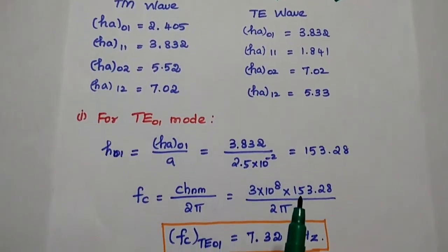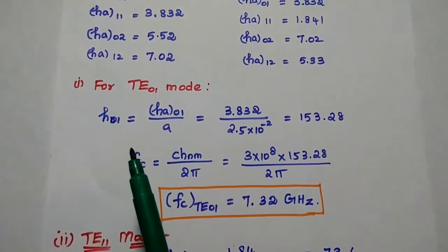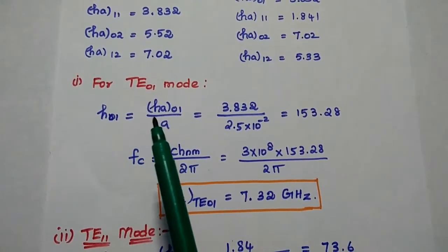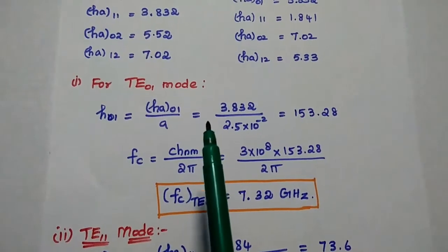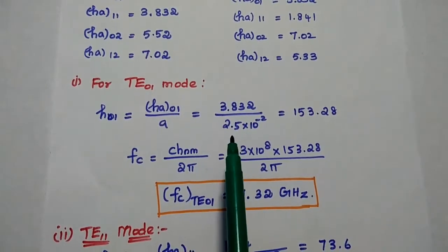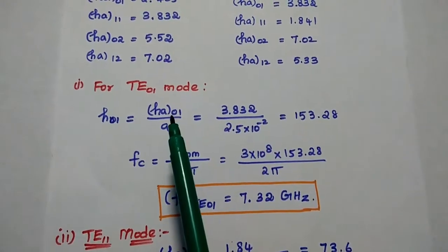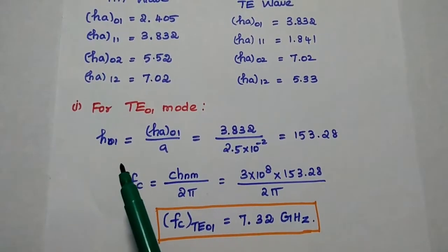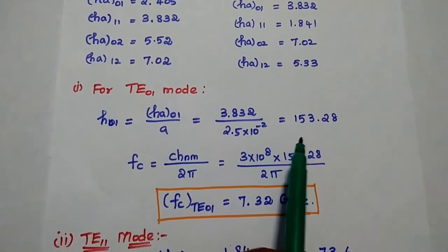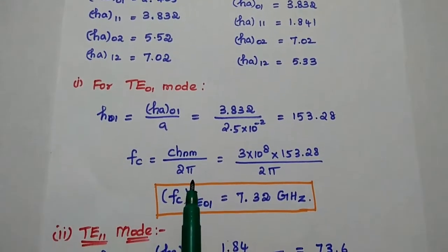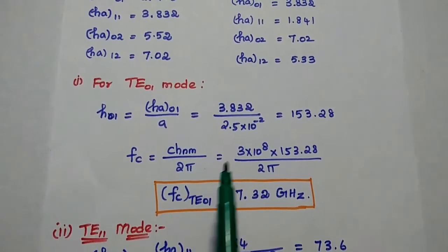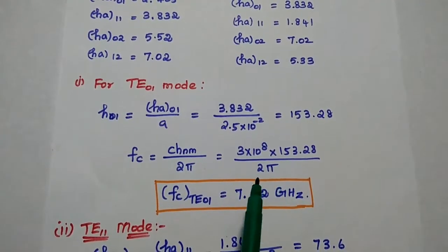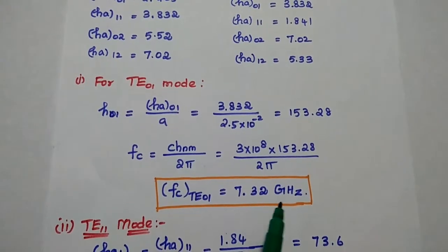Next, we are going to find out the cutoff frequency for each mode. Starting with TE01 mode, we find H01 = H'_01 / A = 3.832 / (2.5 × 10⁻²) = 153.28. Substituting this value in the cutoff frequency formula, fc = 3 × 10⁸ × H01 / 2π, the answer is 7.32 GHz.